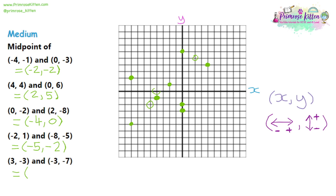For the final medium question, we've got x-coordinates 3 and negative 3. Right in the middle of 3 and -3 should be 0. Then for the y-coordinates, we've got -3 and -7, so in between 3 and 7: the middle is 5, and as they're negative it'll be -5. So the midpoint should be (0, -5). Drawing the coordinates on the graph to double-check: (3, -3) is 3 right and 3 down, and (-3, -7) is 3 left and 7 down. The midpoint falls right on the y-axis at 0 x, and 5 down, confirming (0, -5).